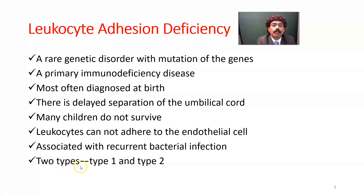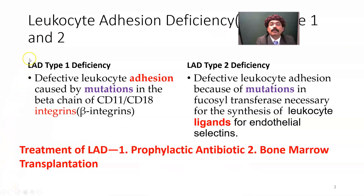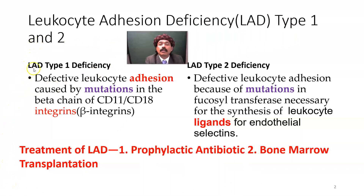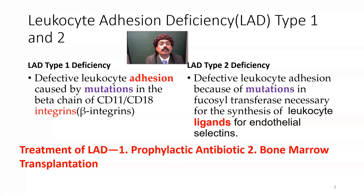There are two types of leukocyte adhesion deficiency: type 1 and type 2. Both types are associated with chronic bacterial infection. In leukocyte adhesion deficiency type 1, there is defective leukocyte adhesion caused by mutation in the beta chain of CD11 and CD18. Leukocytes are unable to adhere to the endothelium of the blood vessel and cannot pass out of it between the endothelial cells.